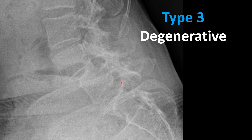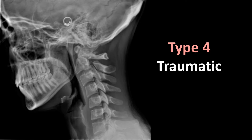Type 4 spondylolisthesis is due to a traumatic etiology. While you might think this would be common, it is actually extremely rare. In the cervical spine at C2 — referred to as a hangman's fracture — it is the most common location and is a very severe medical emergency. On this image we can see a bilateral pedicle fracture of C2 causing a slight anterolisthesis of C2 in relation to C3.